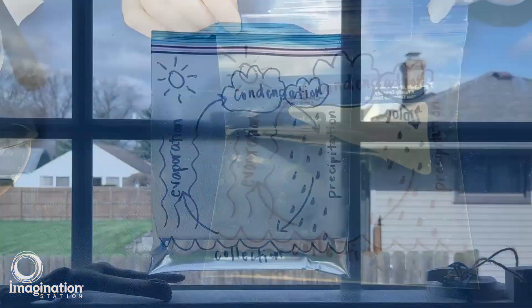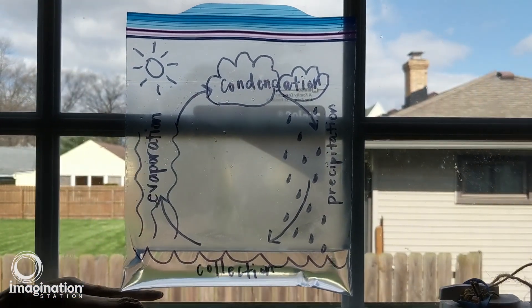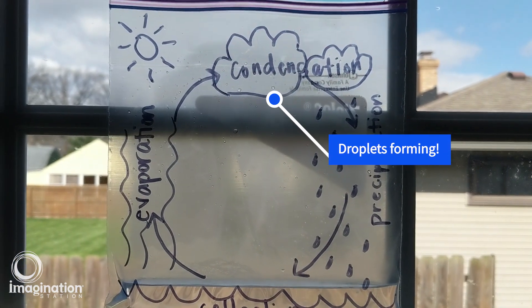Over time you'll begin to see condensation at the top of the bag. When enough condensation gathers at the top it will form droplets that flow back down to the bottom of the bag.